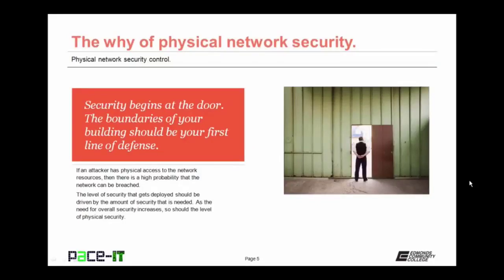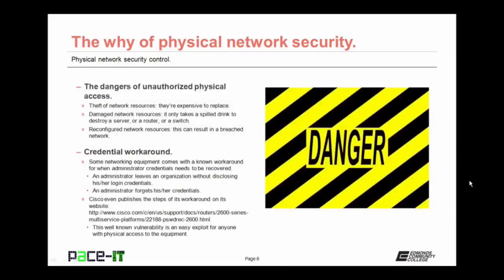Your network security actually begins at the door. The boundaries of your building should be your first line of defense. If an attacker has physical access to the network resources, then there is a high probability that those network resources can be breached. The level of security that gets deployed should be driven by the amount of security needed. As the need for overall security increases, so should the level of physical security. There are dangers associated with unauthorized physical access — including theft of expensive network resources, unintentional damage such as a spilled drink destroying a server or router, and the possibility that an attacker with physical access can reconfigure those network resources, resulting in a breached network.